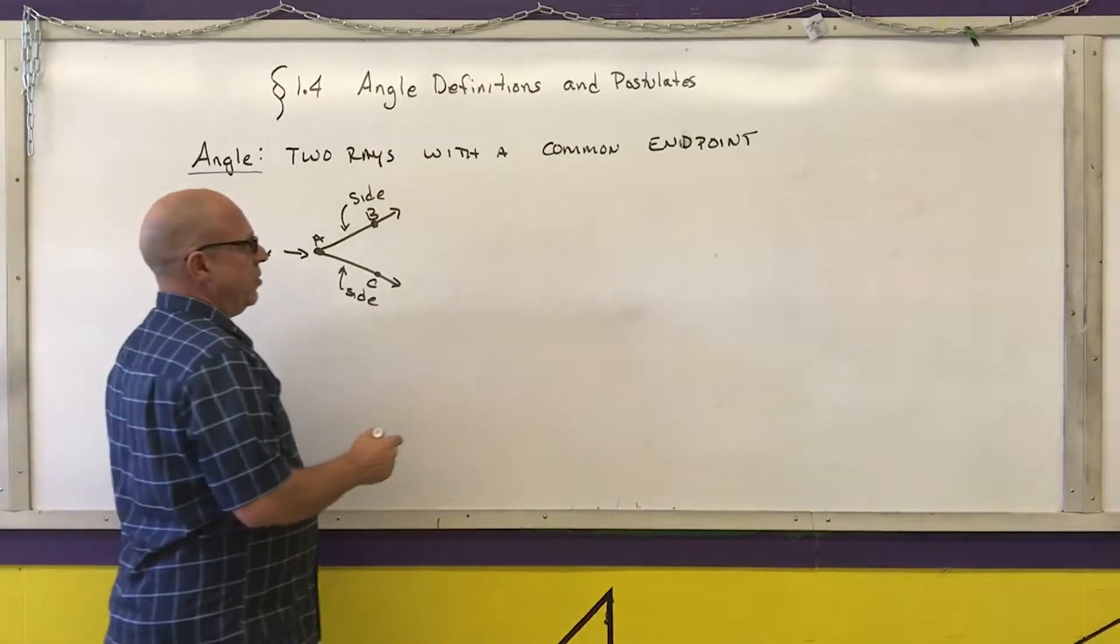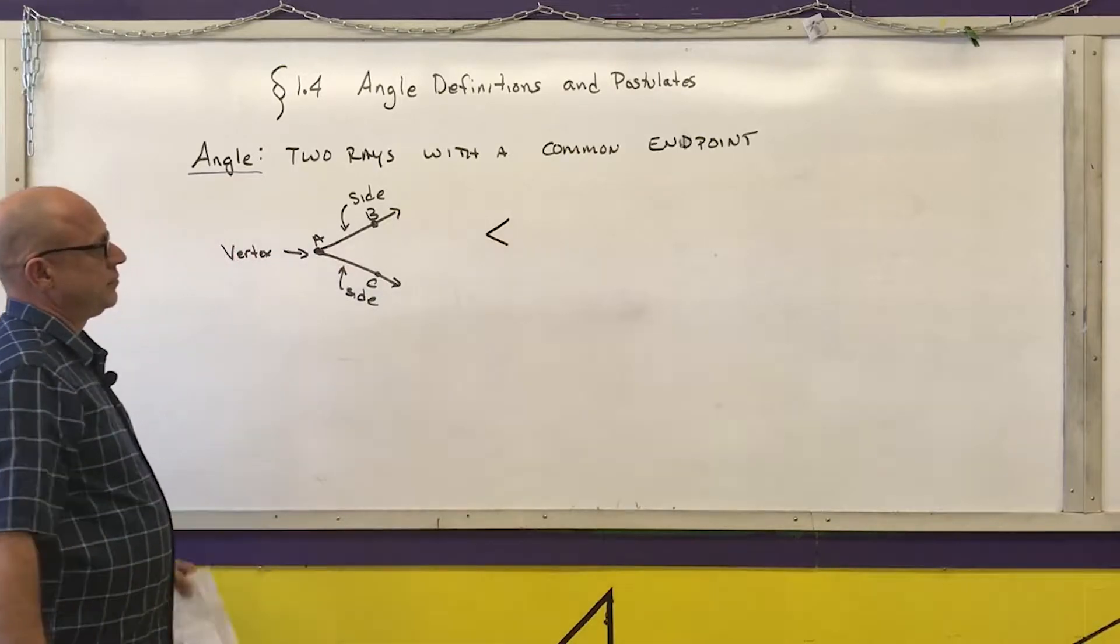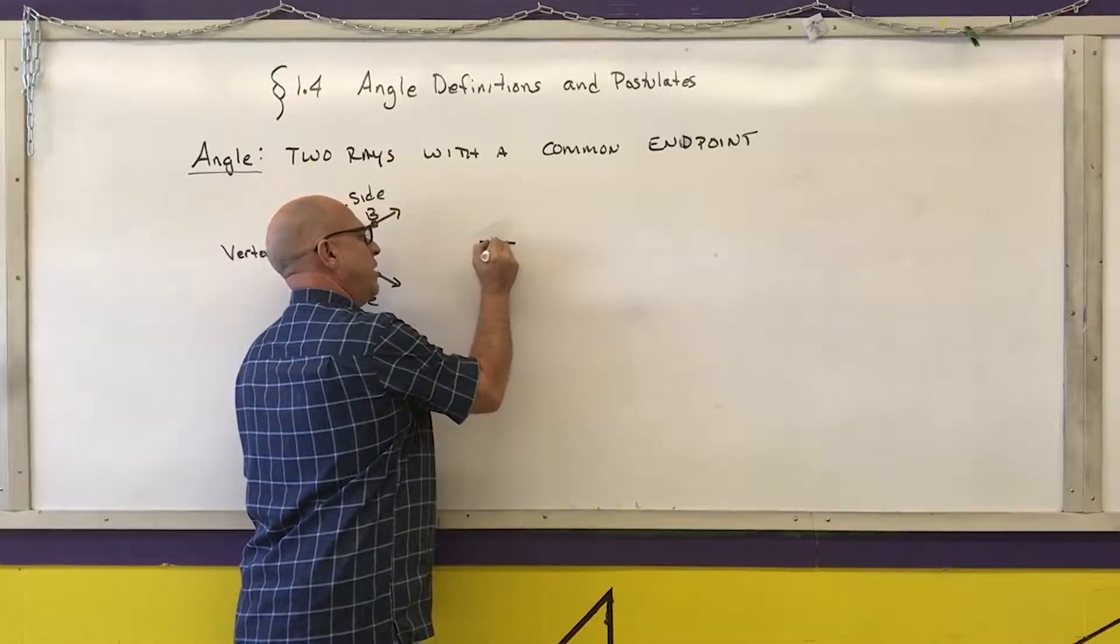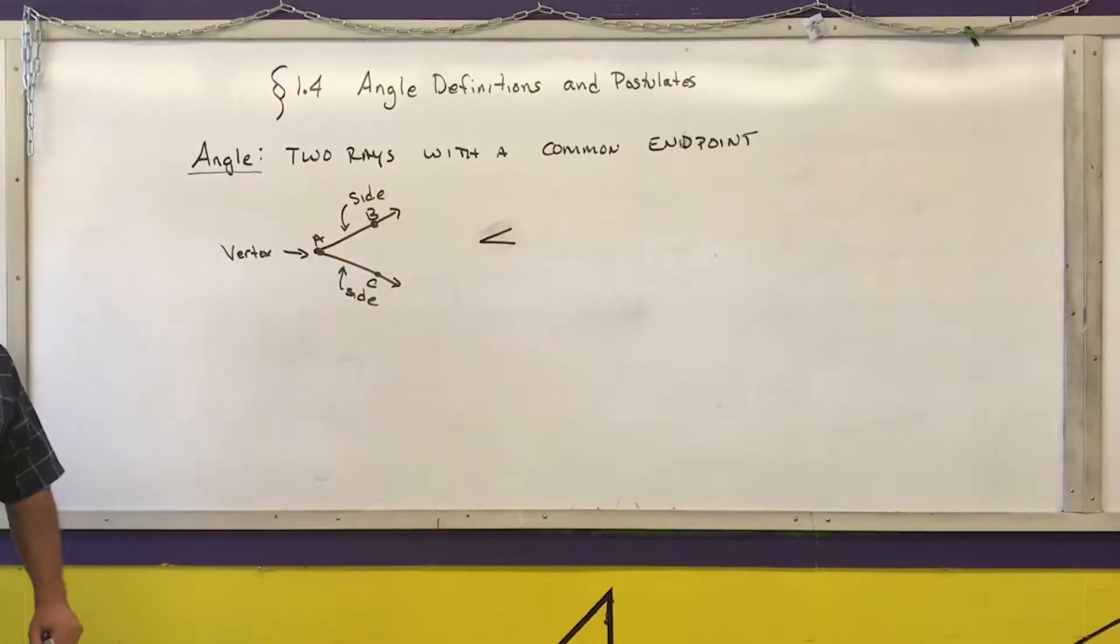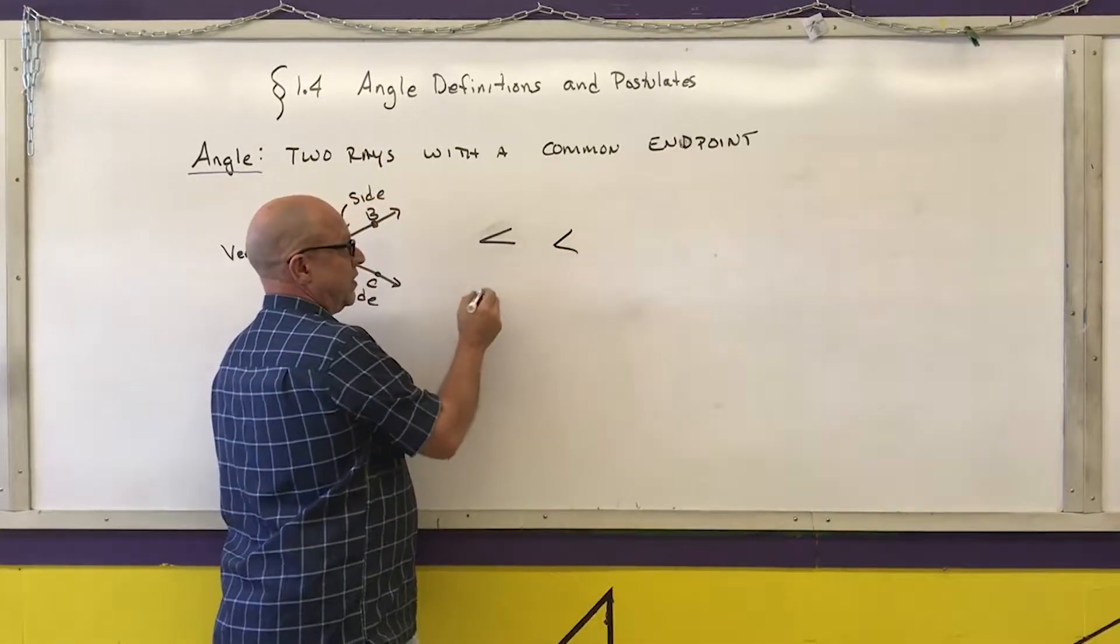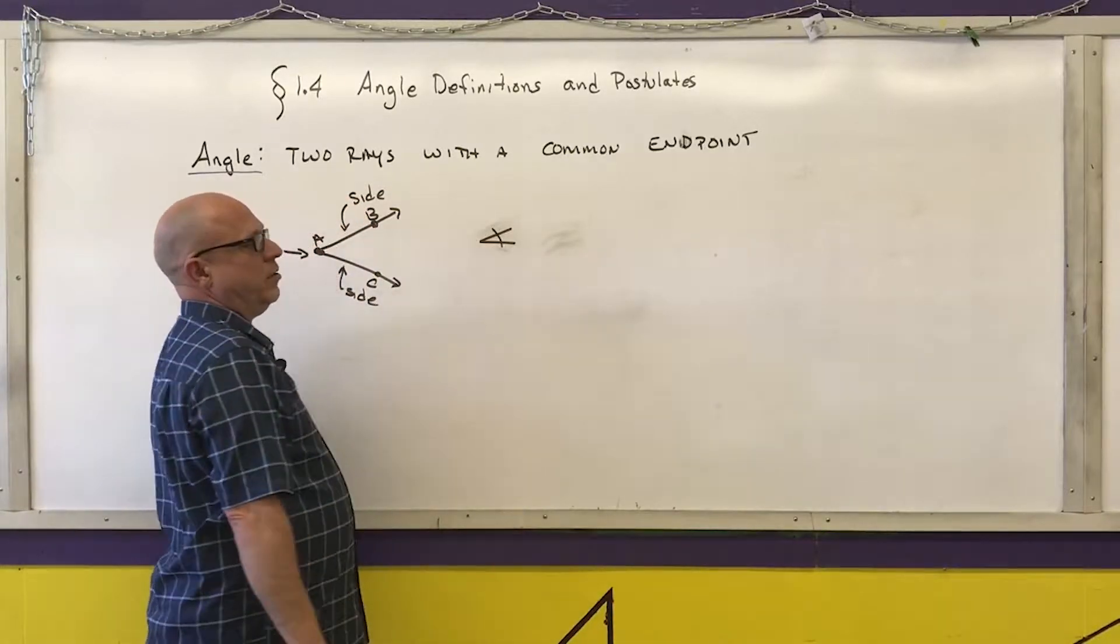The symbol that we use for an angle looks like this. It is a horizontal line that looks almost like the less than symbol. Because you can confuse it with the less than symbol, I want you to put a little arc when you give me the symbol for an angle.